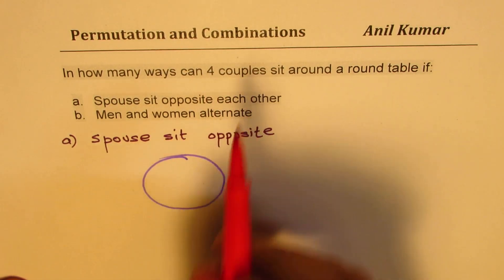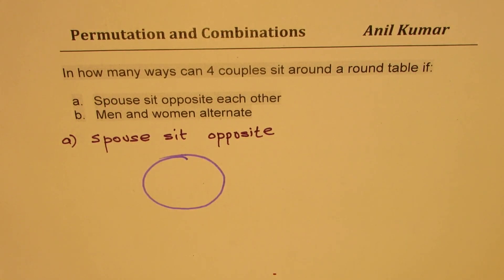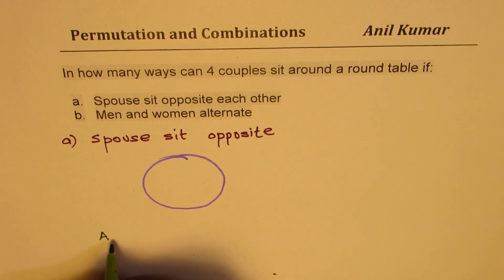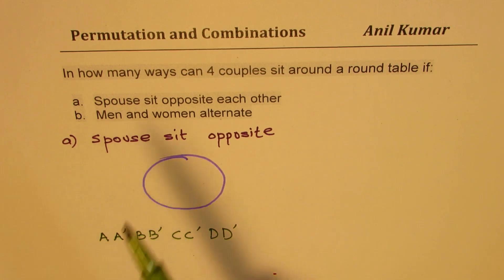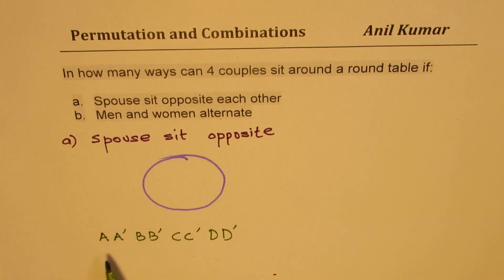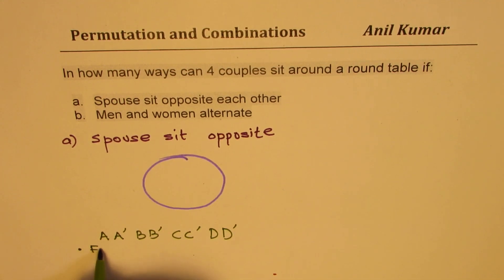We have four couples: A and A-dash, B and B-dash, C and C-dash, and D and D-dash. When we say spouses sit opposite each other, if I place one person here, the spouse will take the opposite position. So to begin with, we have to fix one person — that is very very important.